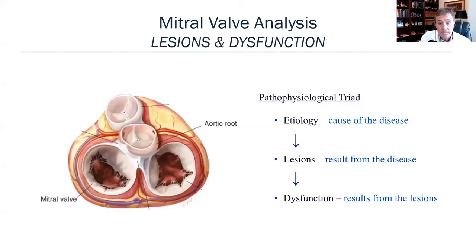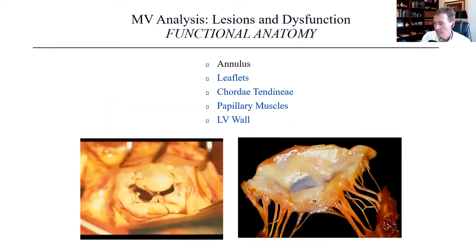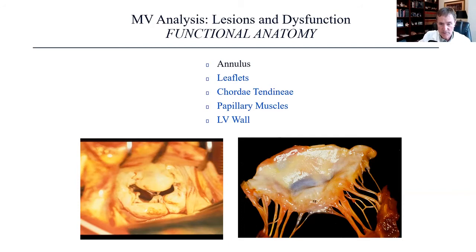Now let's talk about the mitral valve. It's the same pathophysiologic triad: etiology — the cause of the disease; lesions — what results from the disease; and dysfunction — what results from the lesions. The functional anatomy of the mitral valve is more complex, encompassing the annulus, the leaflets, chordae tendineae, papillary muscles, and left ventricular wall. I'm going to talk about abnormalities in all of those and how we address them.